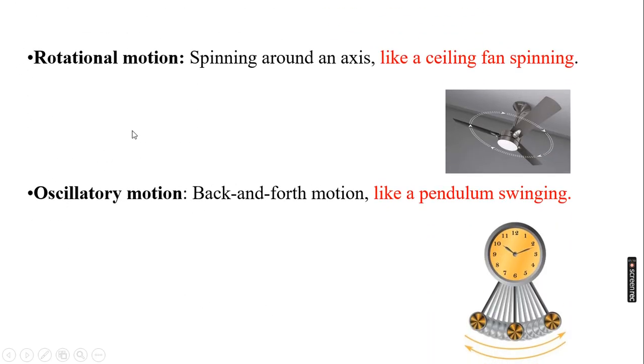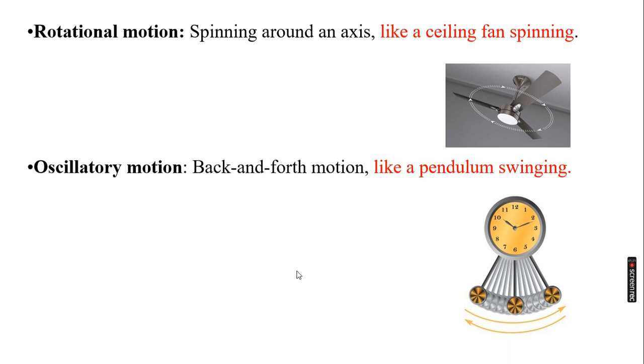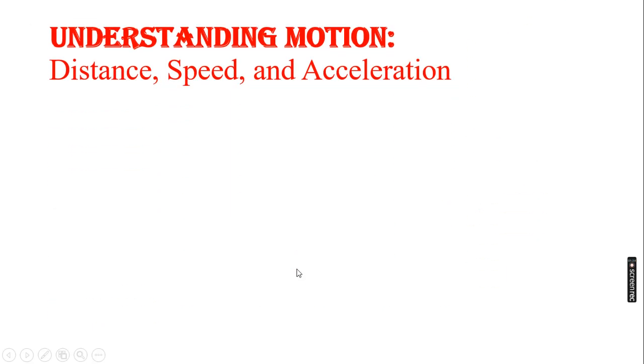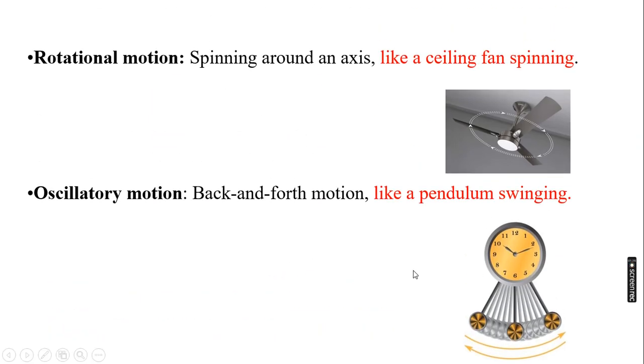Then is rotational motion, spinning around an axis. So I know that there is a fan. There is a fan axis around. So which motion is doing? Rotational motion. Oscillatory motion, which is back and forth motion. So the pendulum's swing is doing which motion? Oscillatory motion.